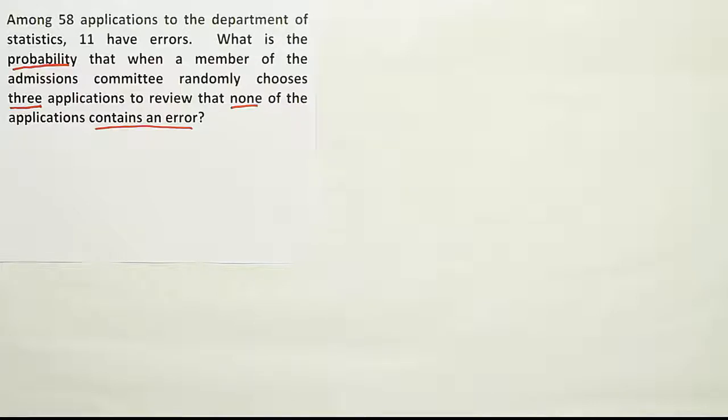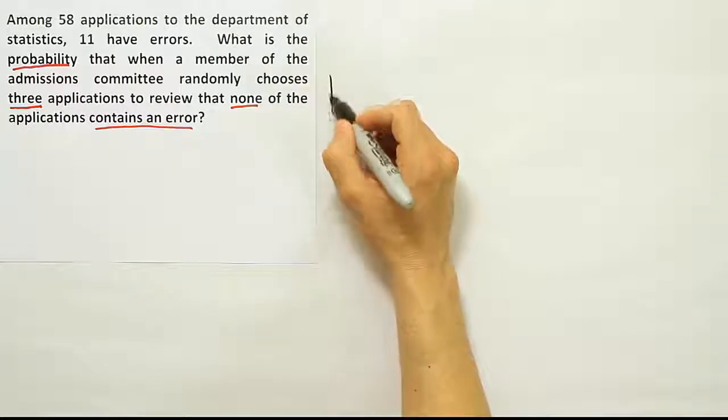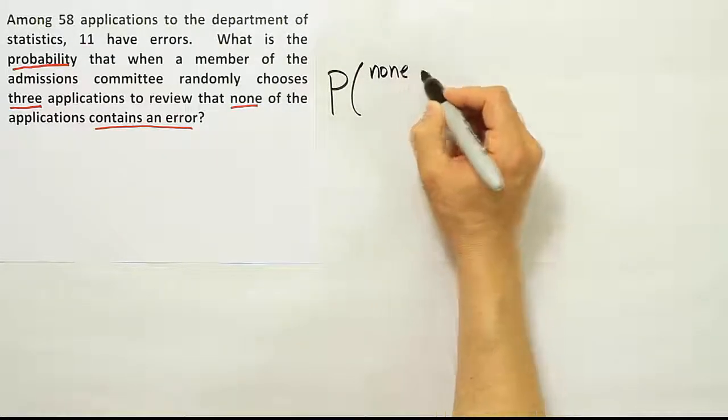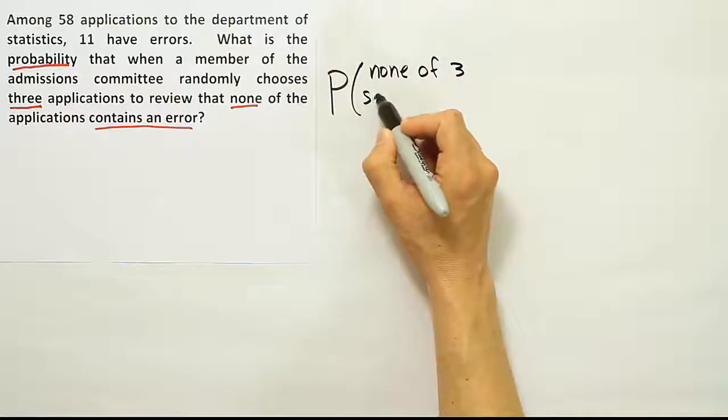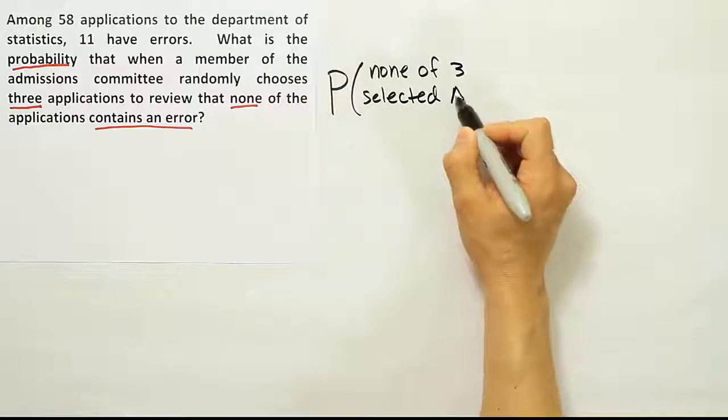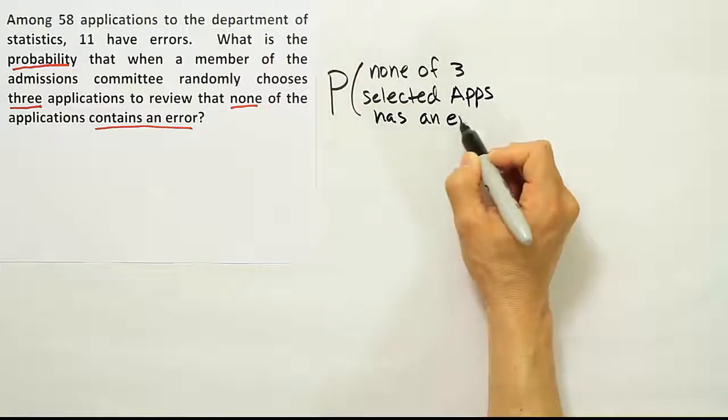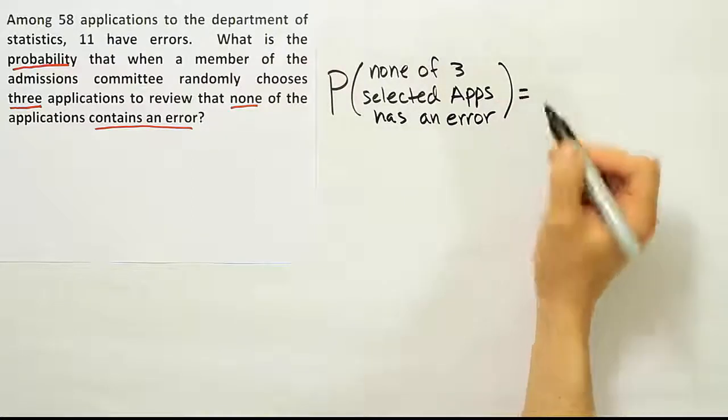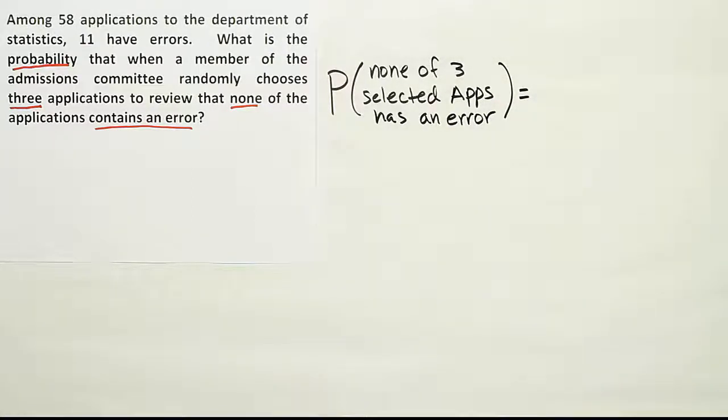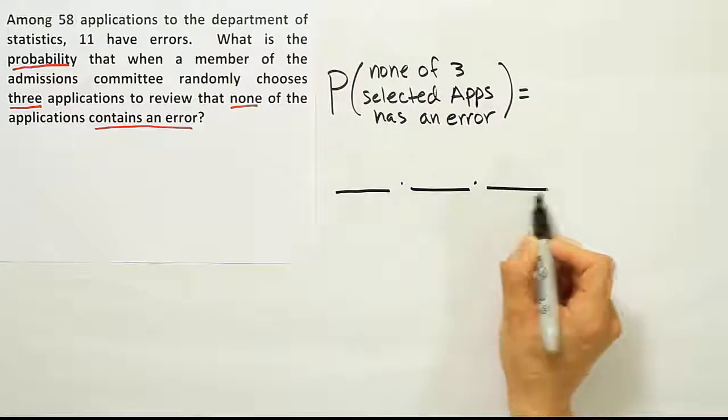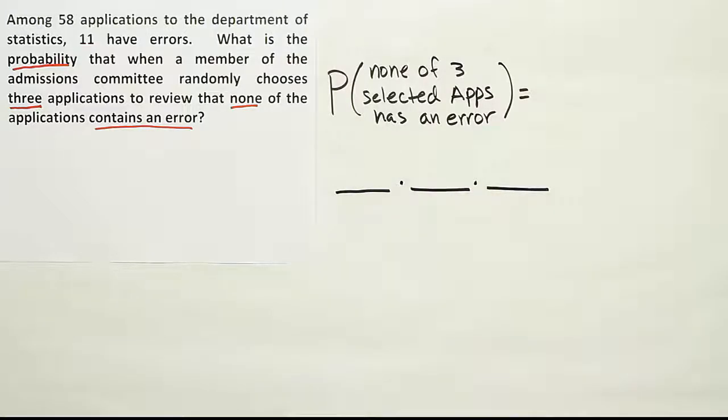At this point, we're going to write a statement out to solve the problem. So let's do the probability that none of three selected apps has an error. The fact that I'm selecting three applications means I should have three probability spaces: one, two, three. And because it's multiplication rule, I will put multiplication between those three spaces.